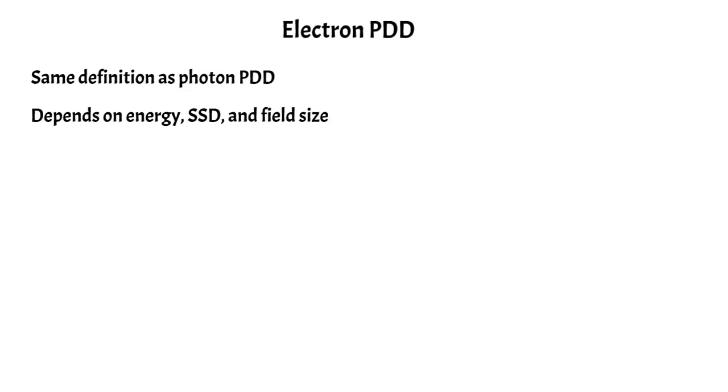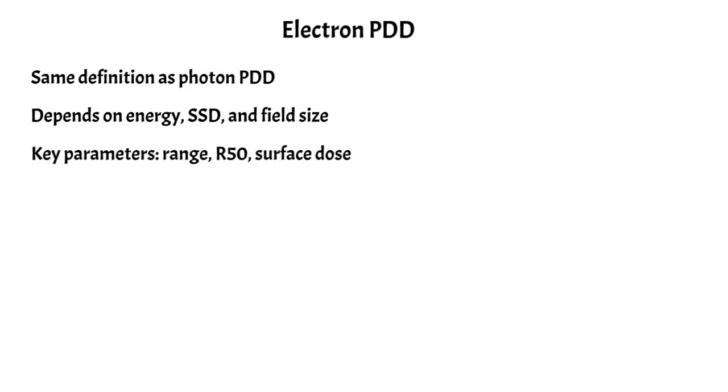It does have a few similar dependencies as well. It depends on the beam energy, the source to surface distance, and also the field size that you are measuring the PDD at. Some key parameters that define the PDD include the range, the R50, which is the range at which the dose drops to 50 percent of its maximum value, and also the surface dose.